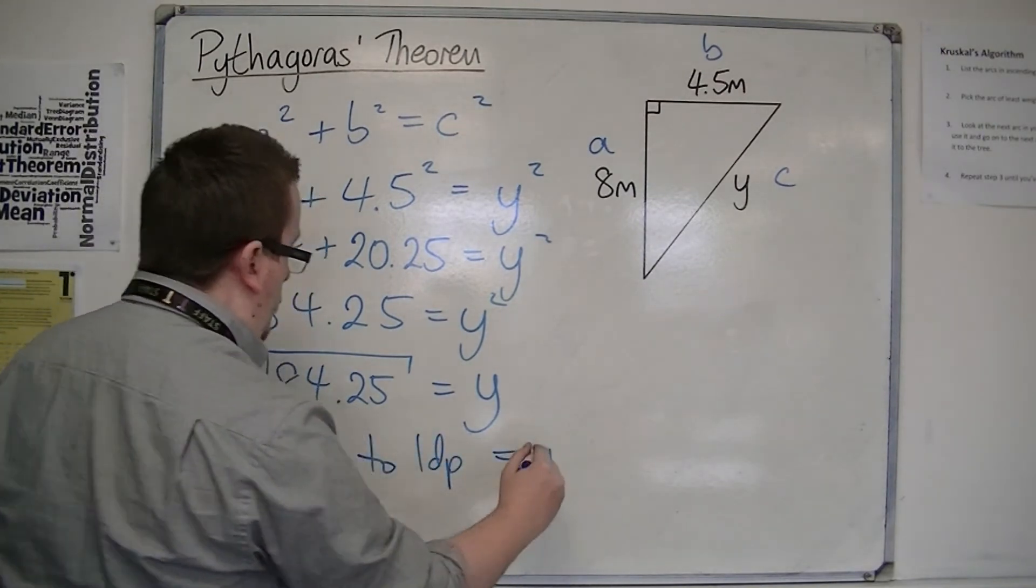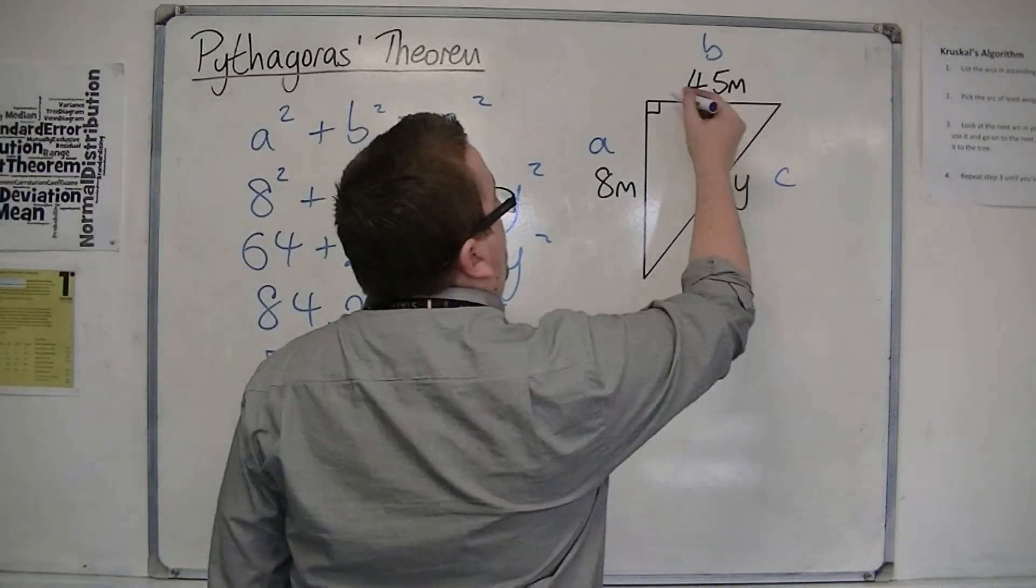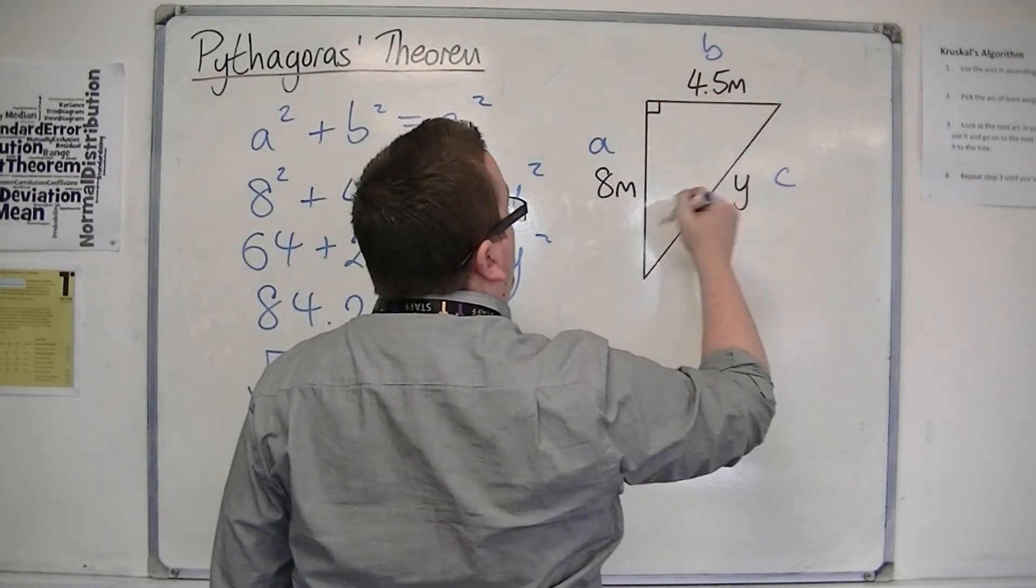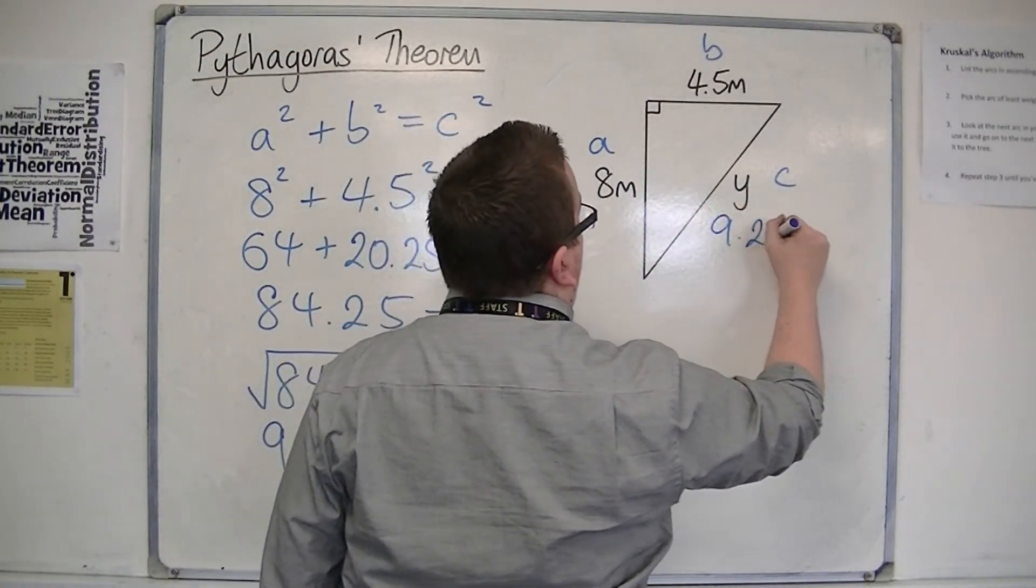This is the value of y. We've got 4.5 metres, 8 metres, so y is 9.2 metres.